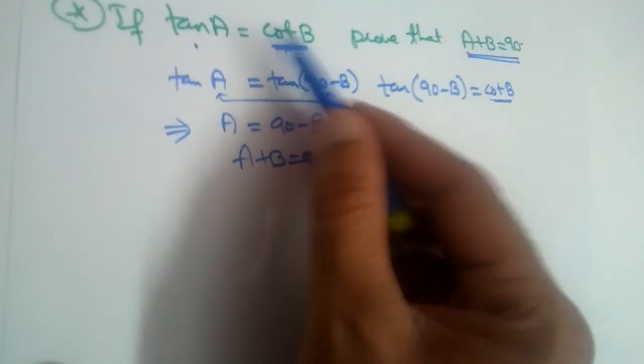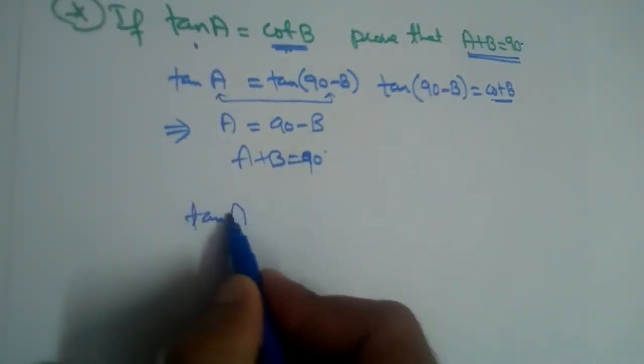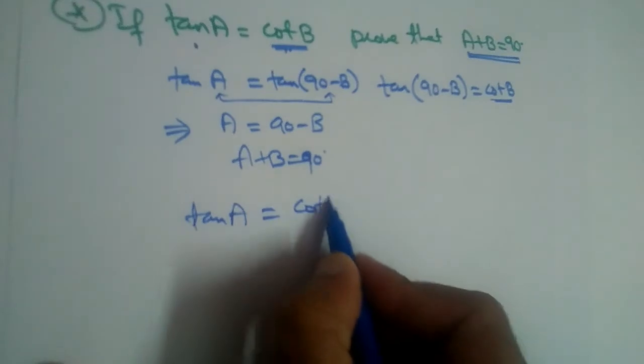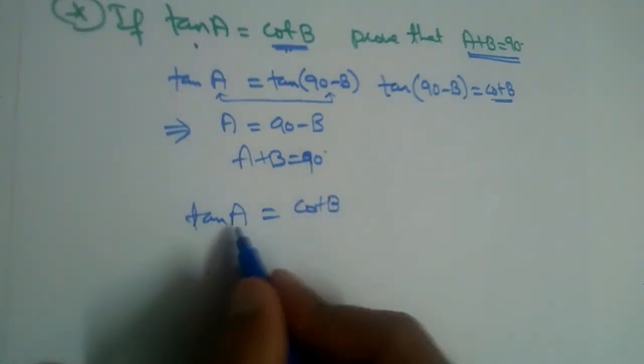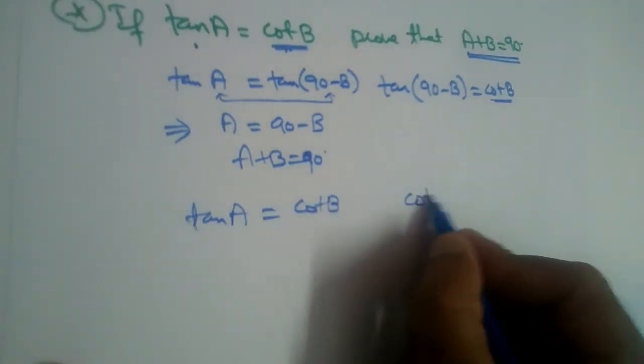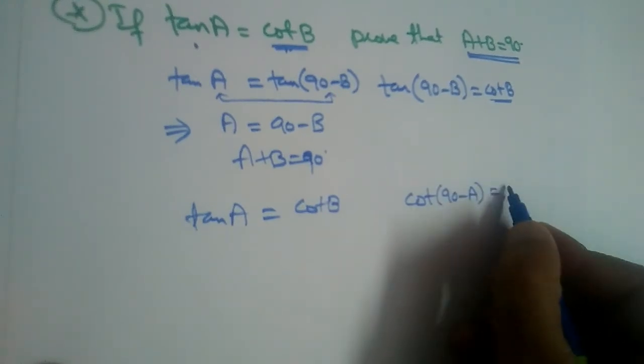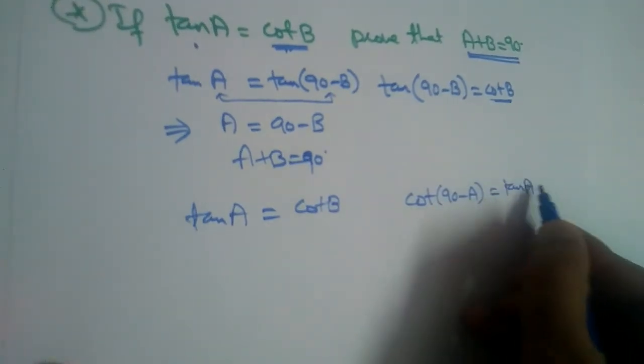This is the question: tan A is equal to cot B. If you want to change tan now, we can write that as cot(90-A) because cot(90-A) is equal to tan A. So in place of tan A can we write cot(90-A)?